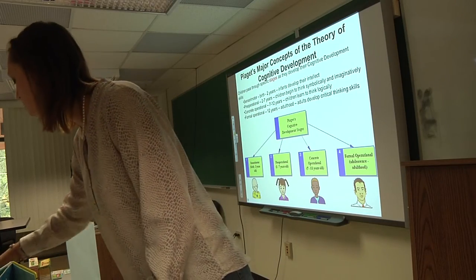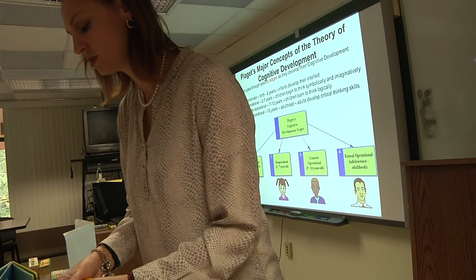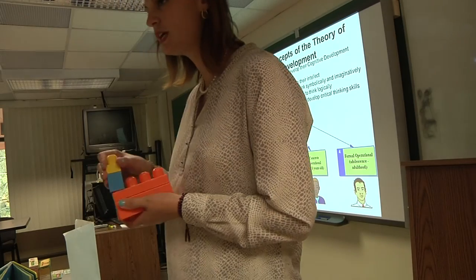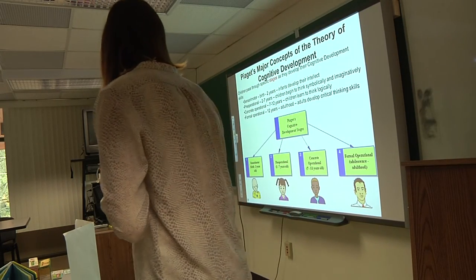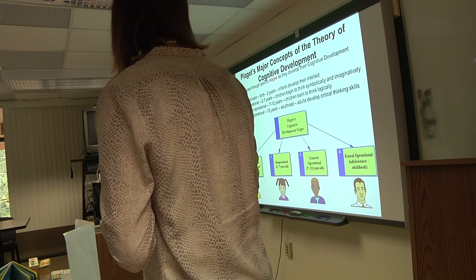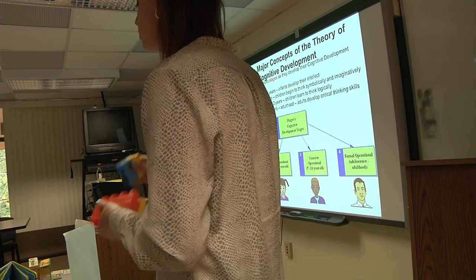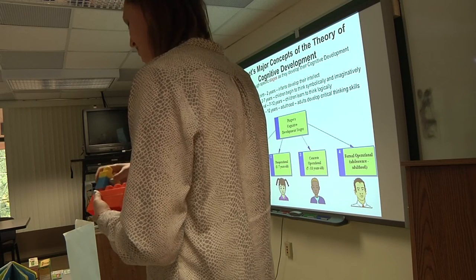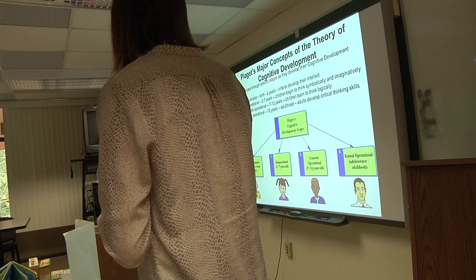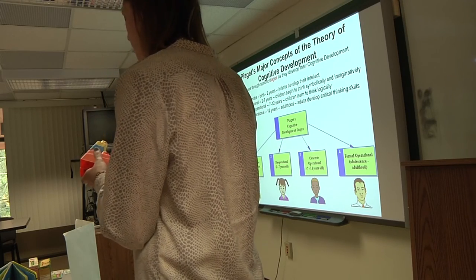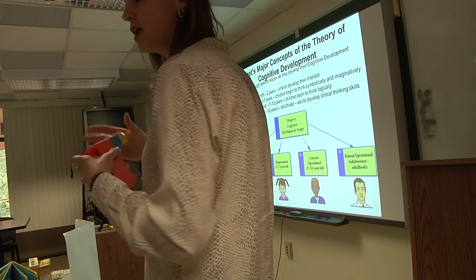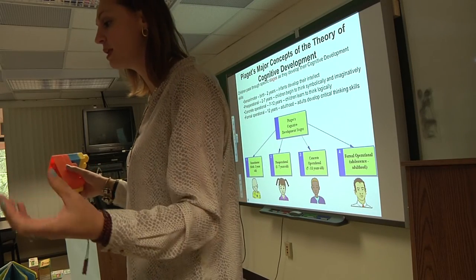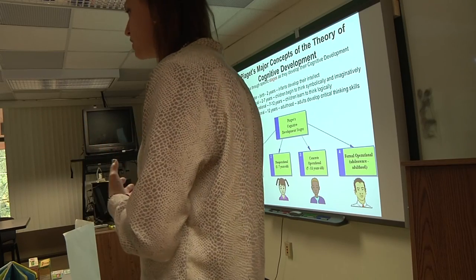Next: blocks. These could span sensory motor and pre-operational stages. In the sensory motor stage, children put them together, feel them, throw them, touch them. In the pre-operational stage, children use them symbolically — making an airplane, building things. Blocks can also be used in social-emotional skill development — putting out blocks and teaching children how to share and work together.